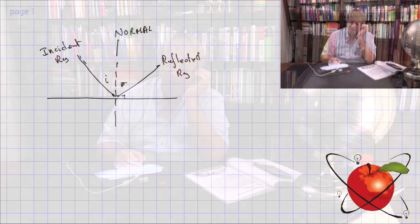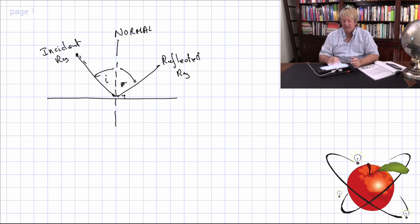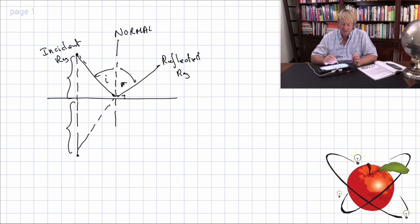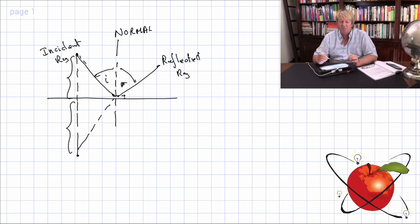The angle of incidence equals the angle of reflection — whatever angle you come in with, that's the angle it goes out with. If an object is sitting here, it appears behind the mirror at exactly the same distance as it is in front — it's reflected about that axis, just like reflections about the x-axis in maths.